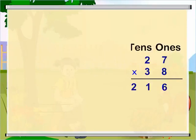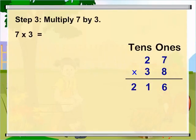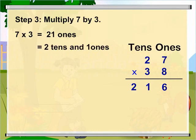Now, multiply 7 ones by 3 to get 21 ones, which is 2 tens and 1 ones. So, write 1 as shown here and carry over 2 to 10's place.